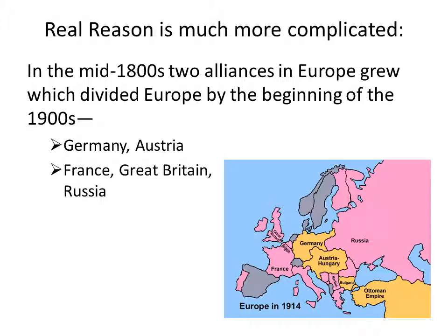Now, the real reason World War I started is much more complicated, and there are many layers of issues. In the mid-1800s, two alliances in Europe grew, which divided Europe by the beginning of the 1900s. You had Germany and Austria, and eventually they allied themselves with Bulgaria and the Ottoman Empire. The most important part of the Ottoman Empire is Turkey, which is still very important today.